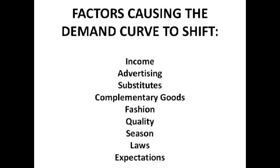Obviously for all of the things we've just done, there's an inverse. I've mainly done the right shift, but for all the ones that cause a right shift there's also the chance of a left shift. For example, if goods become unfashionable — left shift. If the price of substitutes falls — left shift. As long as you can know it one way, you'll know it the other way as well because the opposite is going to be the case.